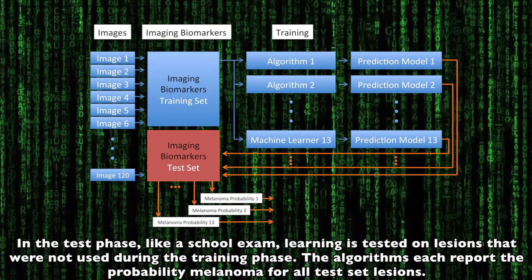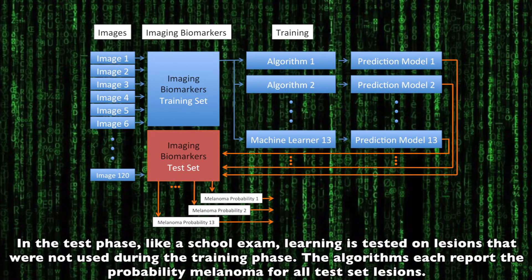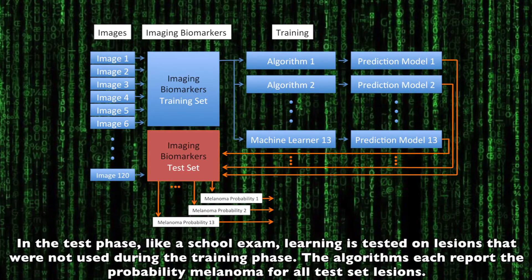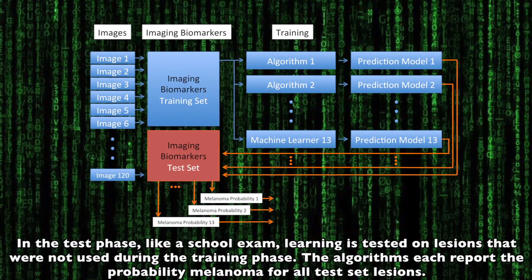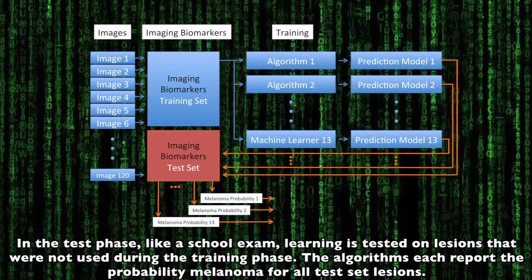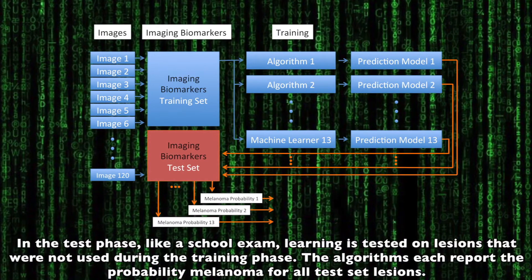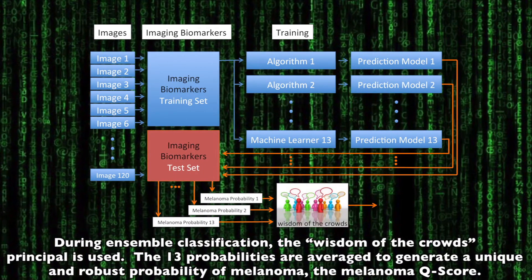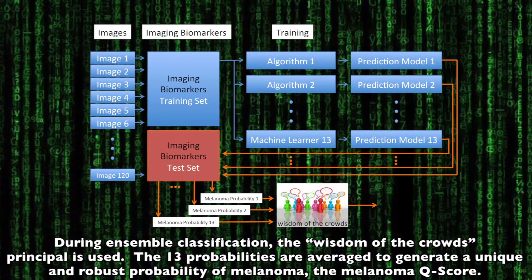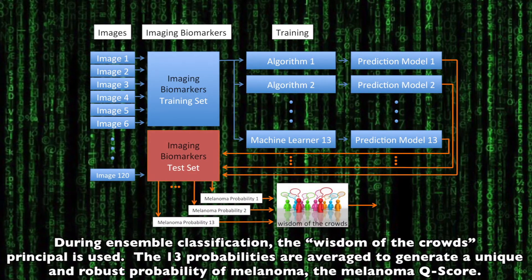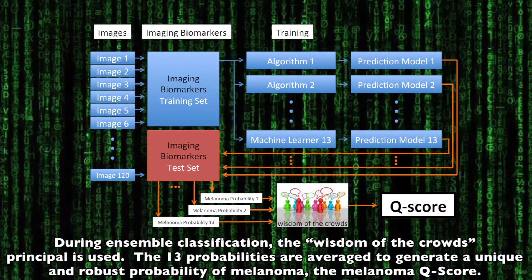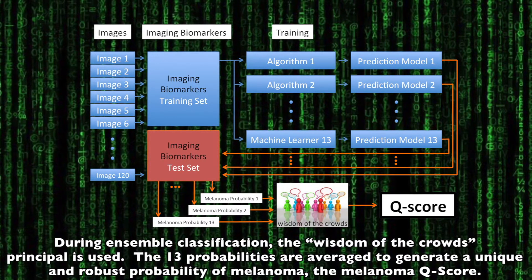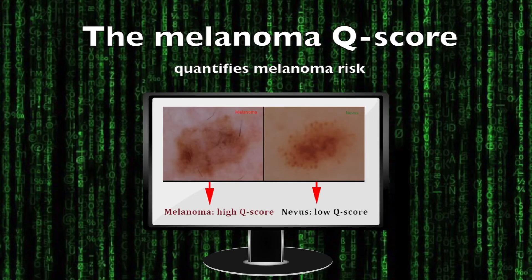In the test phase, like a school exam, learning is tested on lesions that were not used during the training phase. The algorithms each report the probability of melanoma for all test-set lesions. During ensemble classification, the wisdom of the crowds principle is used: the 13 probabilities are averaged to generate a unique and robust probability of melanoma — the melanoma Q-score.